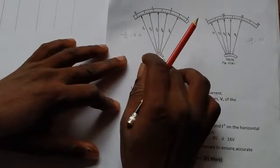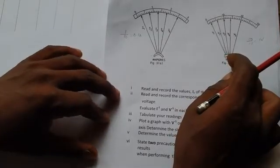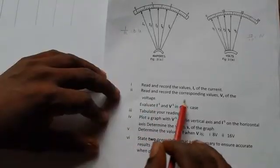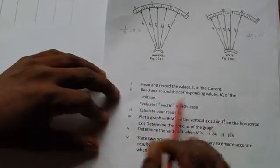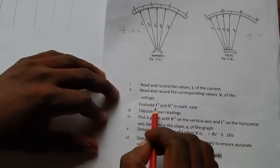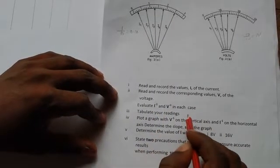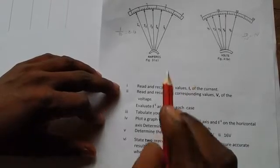The ammeter measures the current. The voltmeter measures the potential difference, the voltage. Now, look at the question. Read and record the value I of the current. Read and record the corresponding value V of the voltage. Evaluate the reciprocal of current and the reciprocal of the voltage in each case. That means we'll be having four parameters.